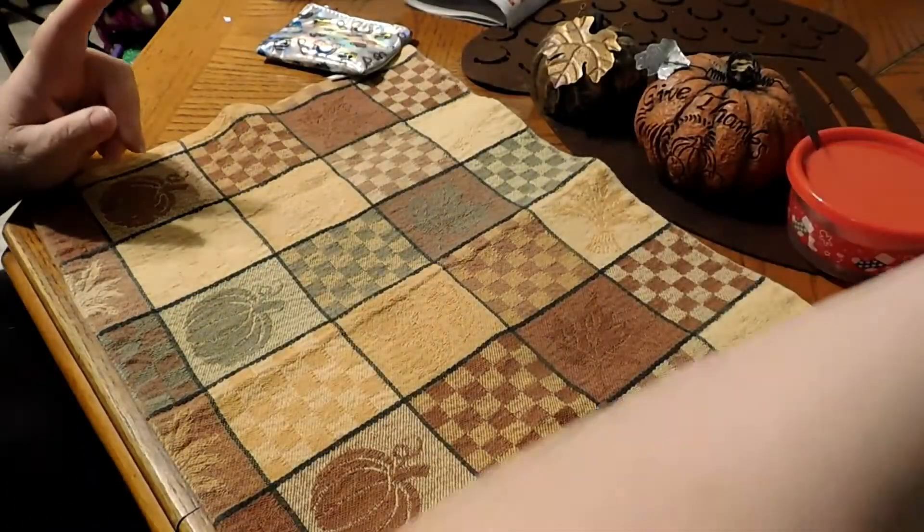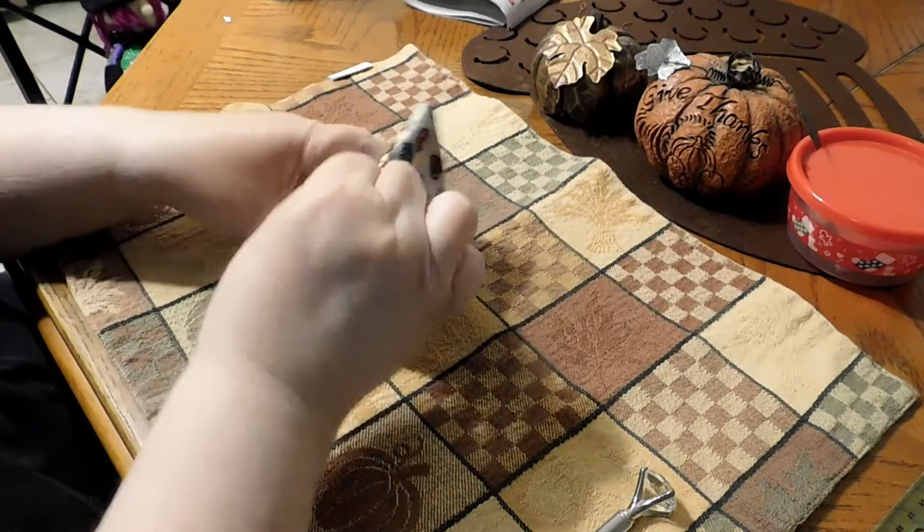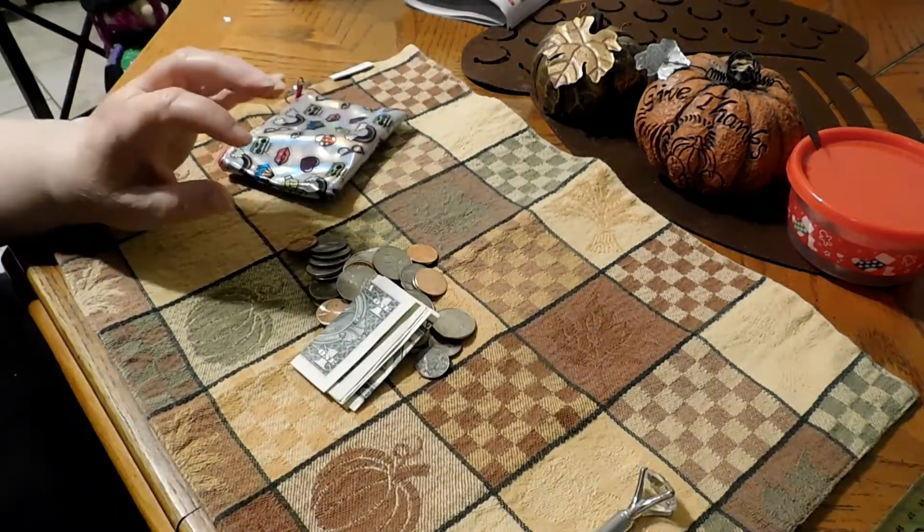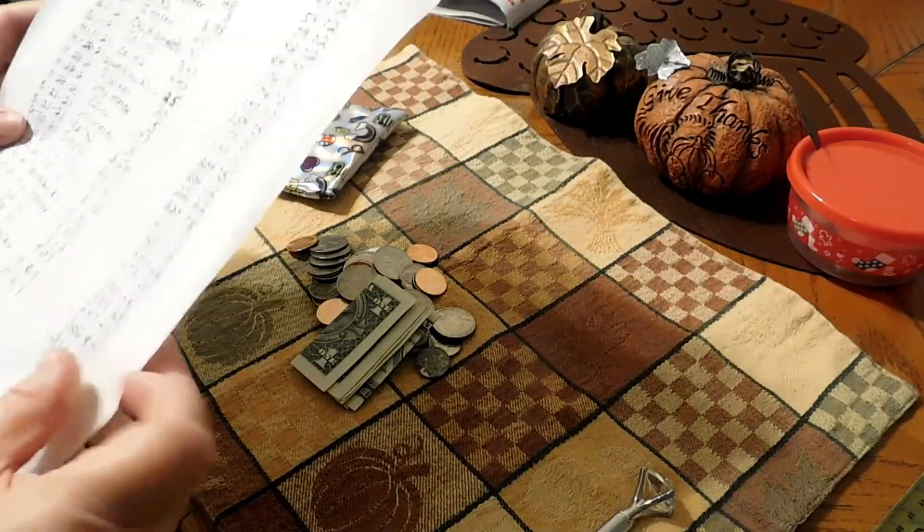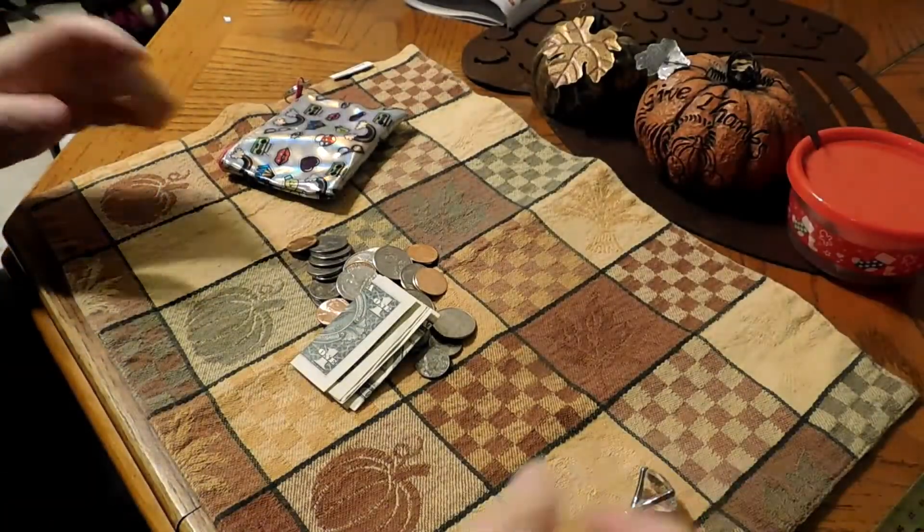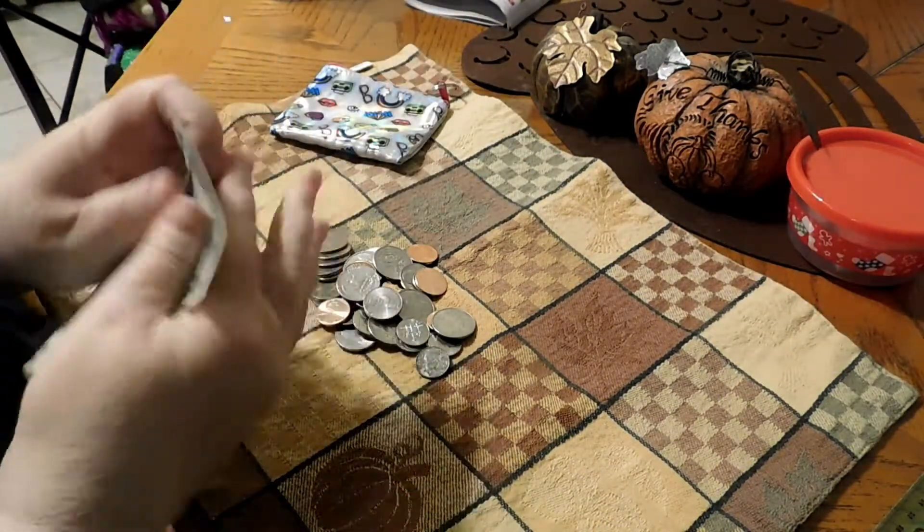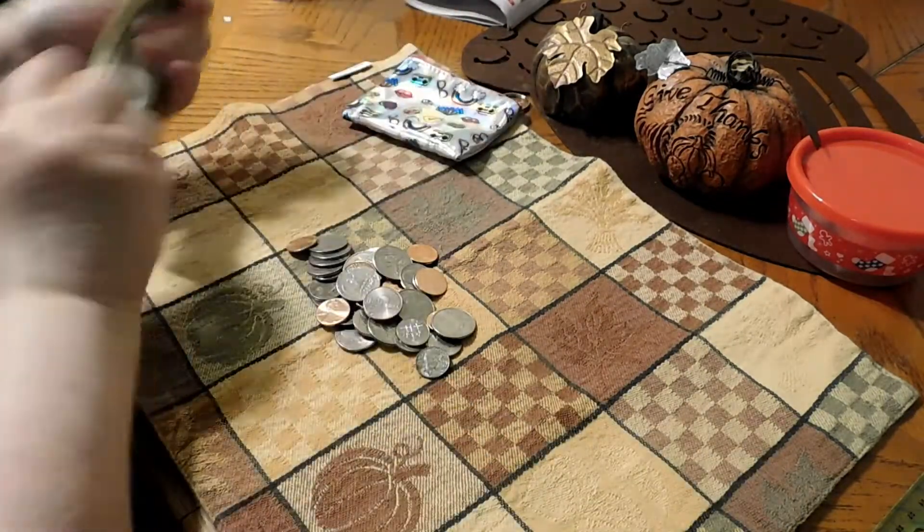So right now we are going to count our change. I had in coins last month, I had $11 and one cent in coins last month. I don't think I had that much this month. Okay, we have two singles and I always keep a dollar's worth of change.